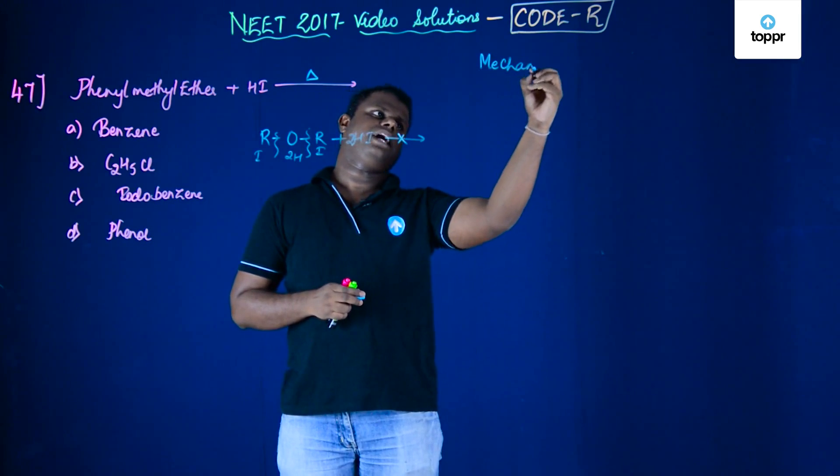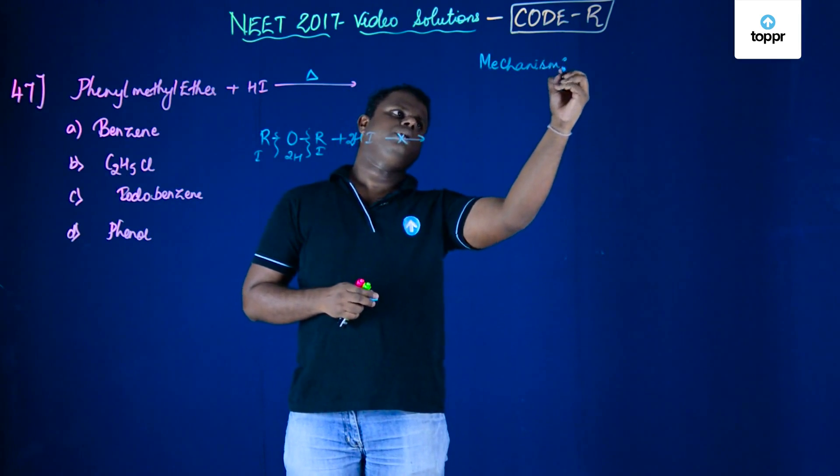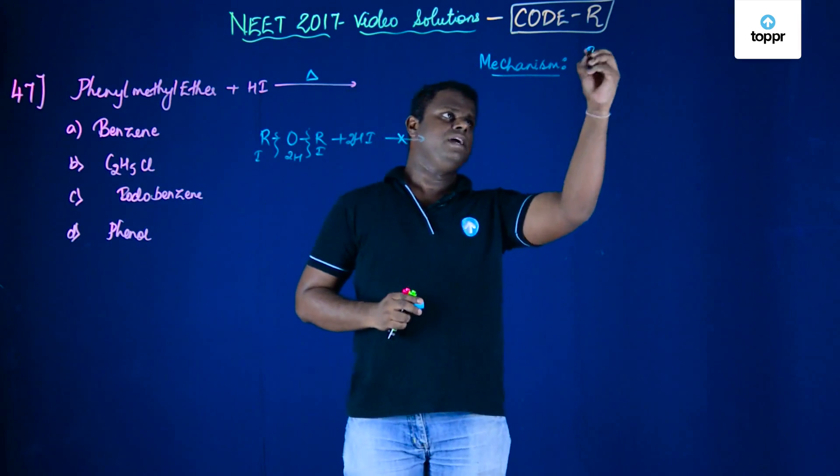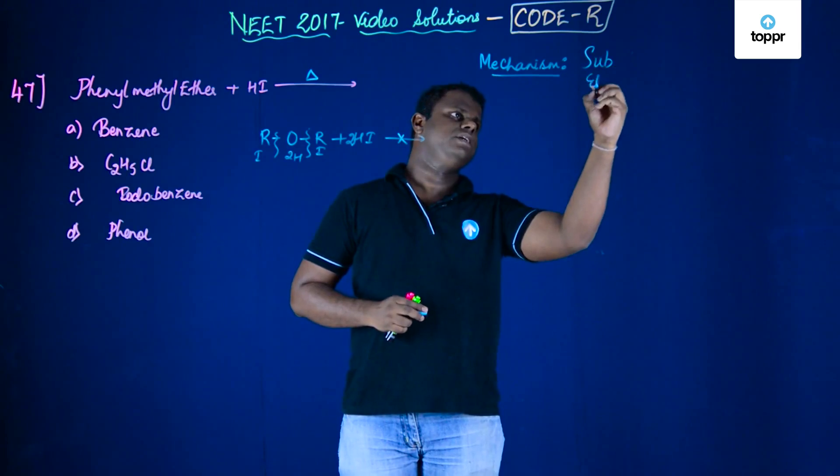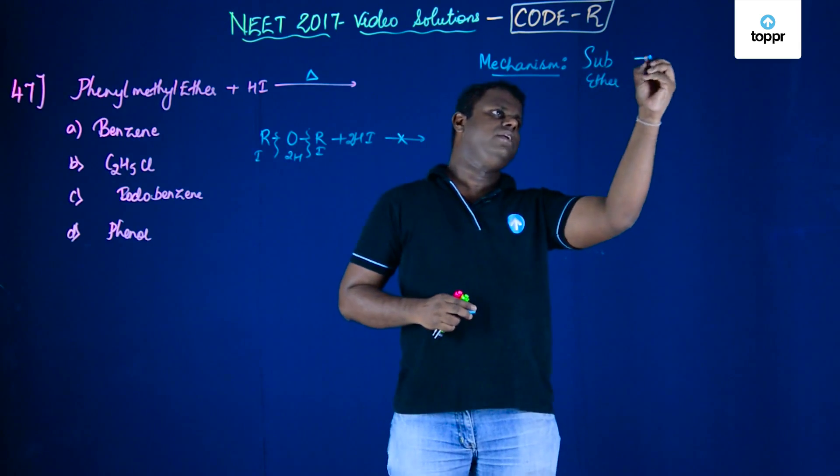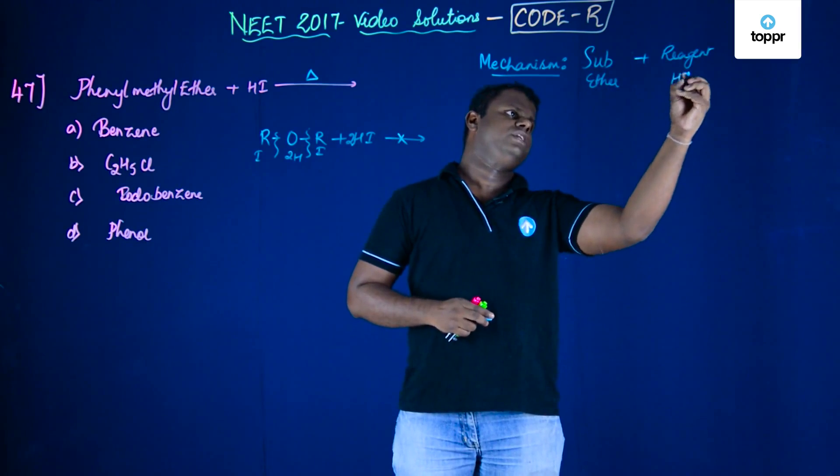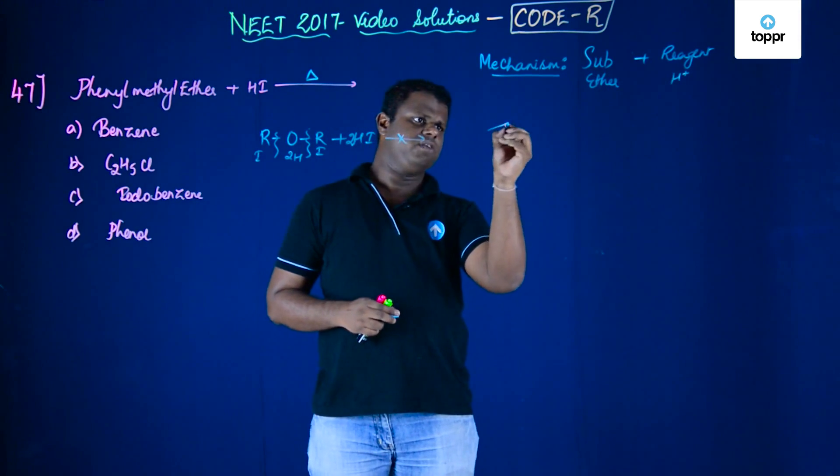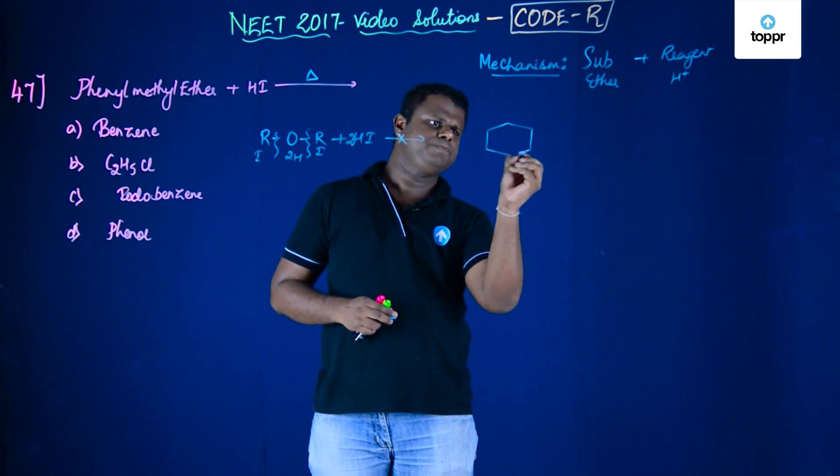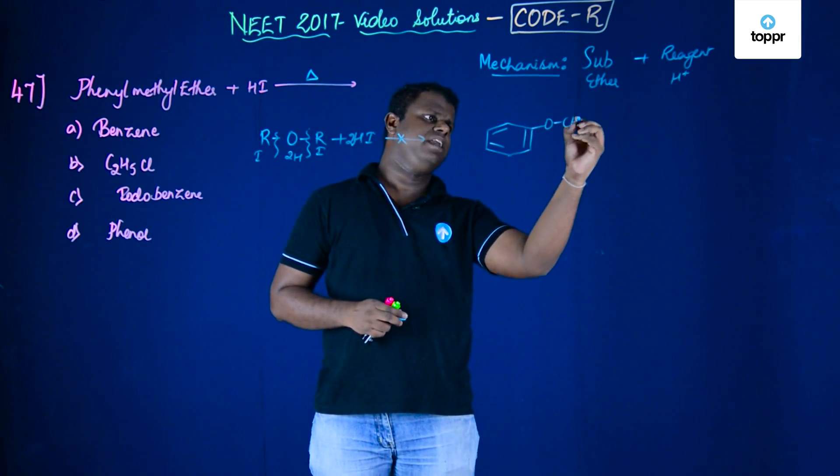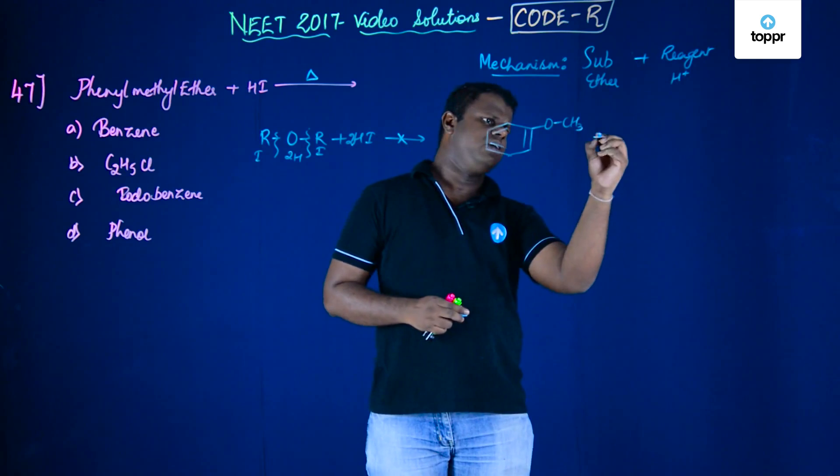Let's see the solution in terms of the mechanism first. In the mechanism what exactly happens? As you know, a typical mechanism has two components. The first component is a substrate which is basically the ether, anisol, and the reagent which is going to be H+. Now let's try to figure out what exactly happens.